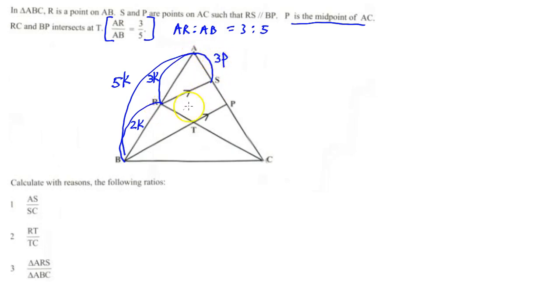If that is now 3p, because these lines are parallel, this is going to be 2p. But what do they tell us? P is the midpoint of AC. Therefore, if that is 3p, then PC is going to be 5p. So AS is 3p and SC is going to equal 2p plus 5p, which is 7p.